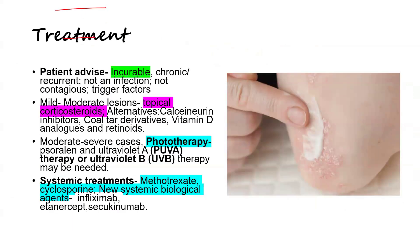Coming to treatment: first, patient advice — they must understand this is an incurable, chronic, recurrent disease that is not an infection and is not contagious, though it has trigger factors. For mild to moderate cases, the most common treatment is topical corticosteroids, possibly in combination with vitamin D or salicylic acid. Alternatives include retinoids, vitamin D, and coal tar derivatives.